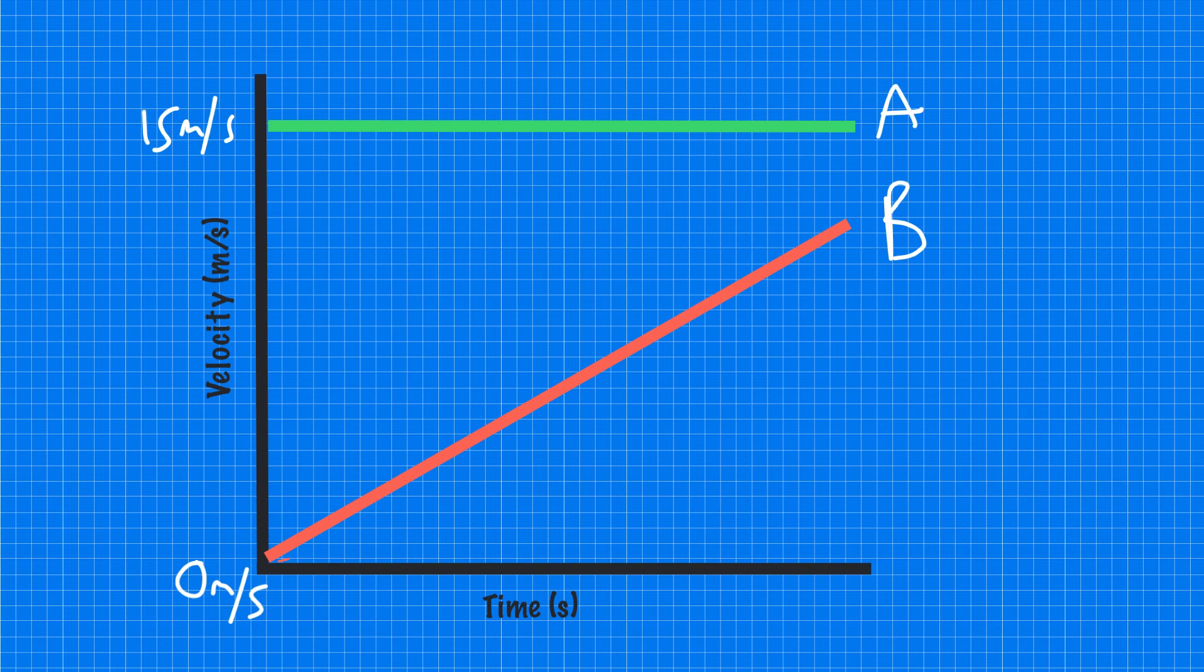The next example we're going to look at is deceleration. So let's imagine we have the same object, 15 metres per second when we start the time, and it slows down to rest. This negatively sloping line represents the fact that the velocity is constantly decreasing as time passes. So then we have a deceleration, or if you remember from the previous lecture, we can also refer to this as a negative acceleration. And we'll refer to that one as C.